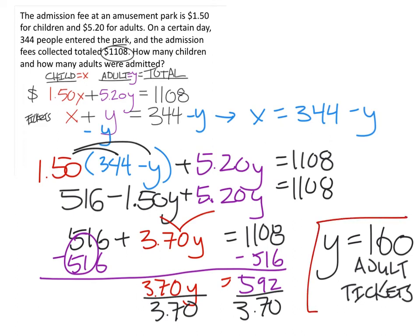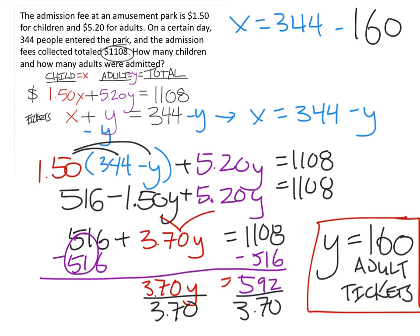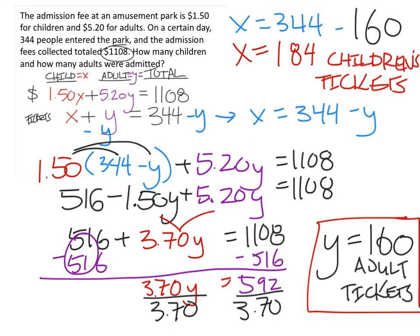Next, we need to solve for x. Since we already manipulated the equation, we can do this quickly. We rewrite x equals 344 minus y, and now y is 160. So 344 minus 160 tells us x equals 184. Since x is the number of children's tickets, we box that in: 184 children's tickets and 160 adult tickets are our two answers.